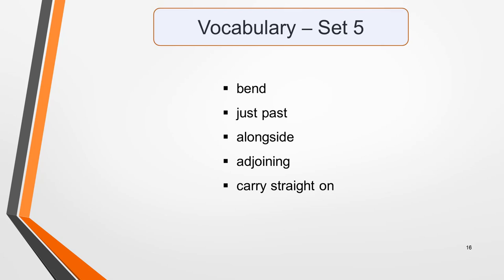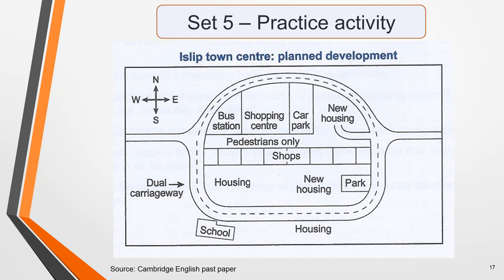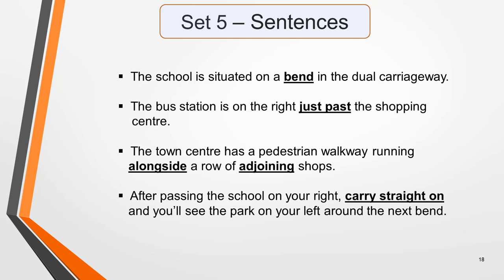Vocabulary set 5: bend, just past, alongside, adjoining, carry straight on. The school is situated on a bend in the dual carriageway. The bus station is on the right, just past the shopping centre. The town centre has a pedestrian walkway running alongside a row of adjoining shops. After passing the school on your right, carry straight on and you'll see the park on your left around the next bend. Pause one final time to study them.